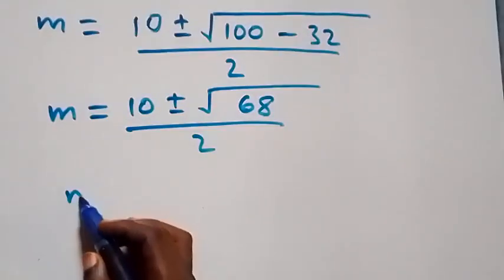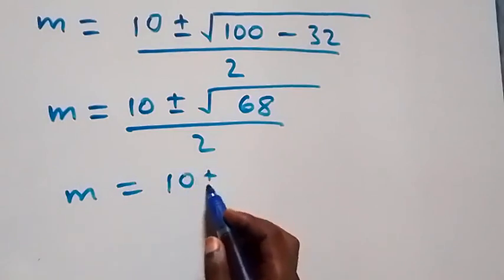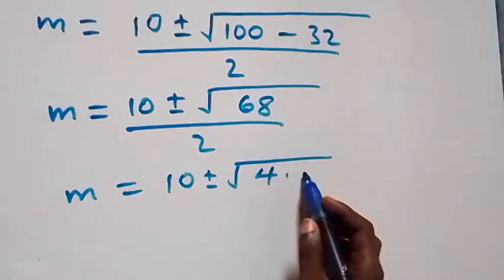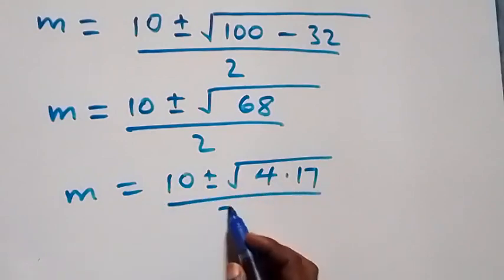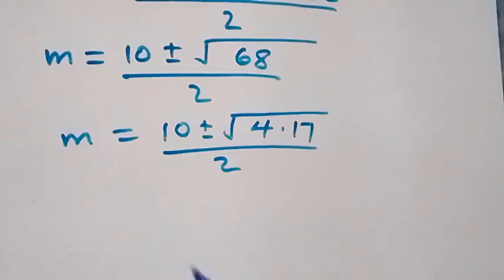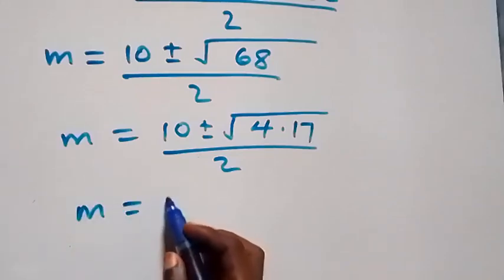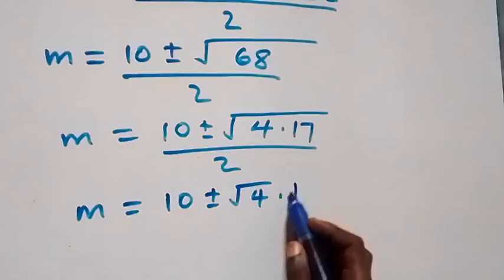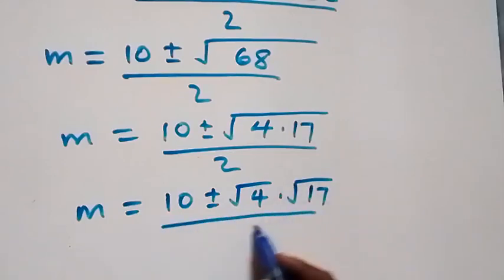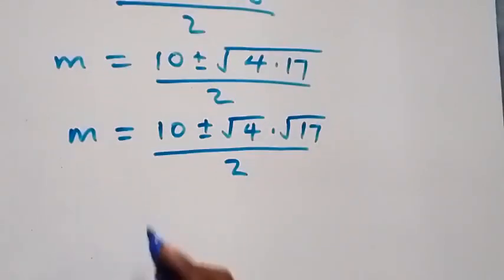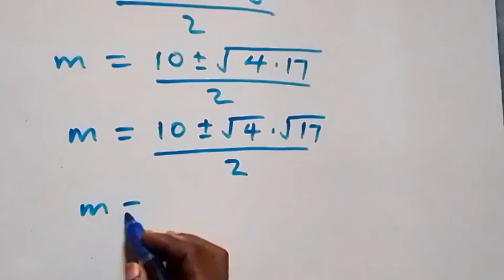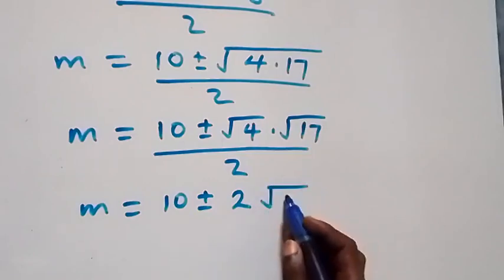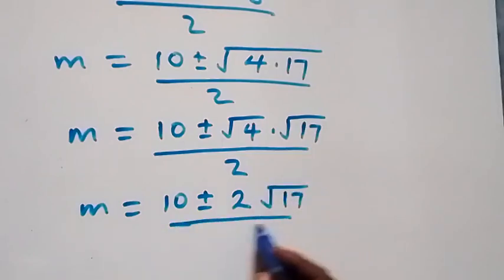This gives us m equals to 10 plus or minus square root of 68 over 2. We can write 68 as 4 times 17, so m equals to 10 plus or minus square root of 4 times 17 over 2. Separating the square roots, we have m equals to 10 plus or minus root 4 times root 17 over 2. That is, m equals to 10 plus or minus 2 times root 17 over 2.